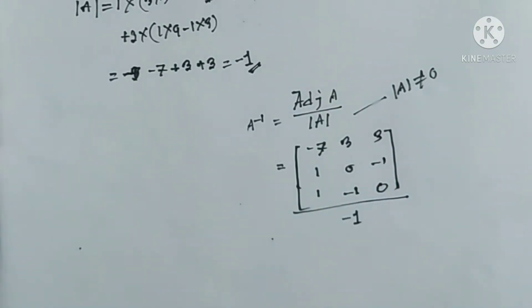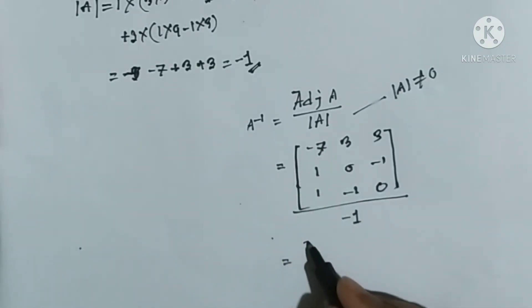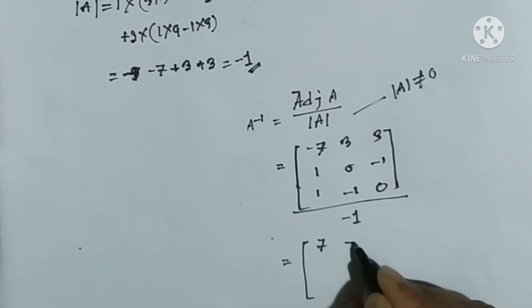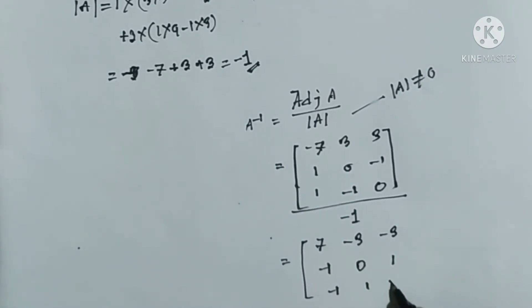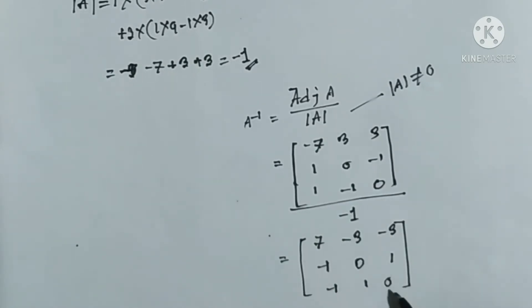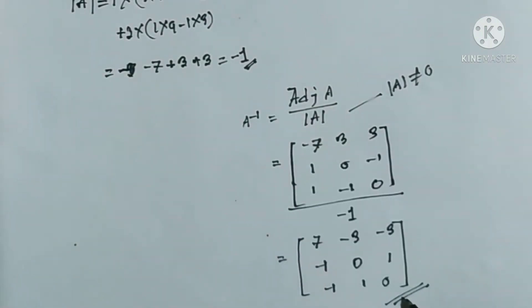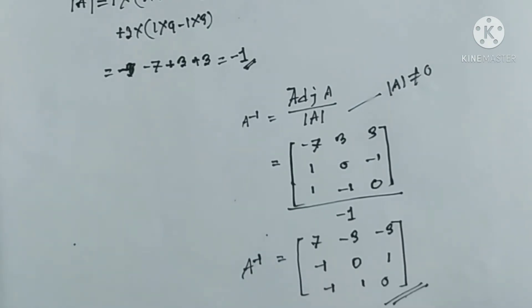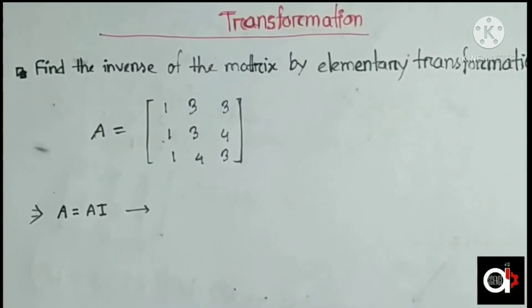Dividing the adjoint matrix [minus 7, 3, 3 / 1, 0, minus 1 / 1, minus 1, 0] by determinant minus 1, we get the inverse matrix: [7, minus 3, minus 3 / minus 1, 0, 1 / minus 1, 1, 0]. This is our inverse matrix of A.